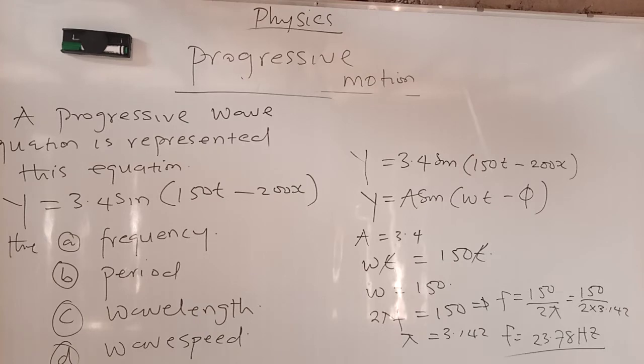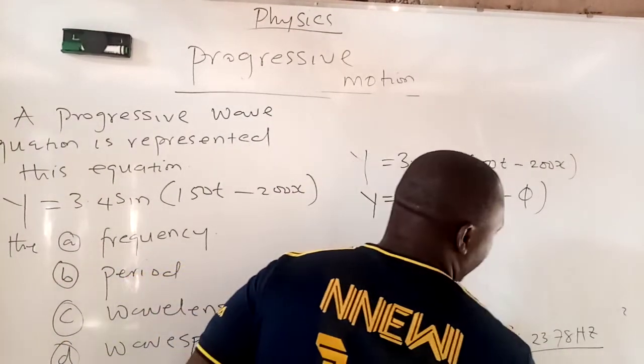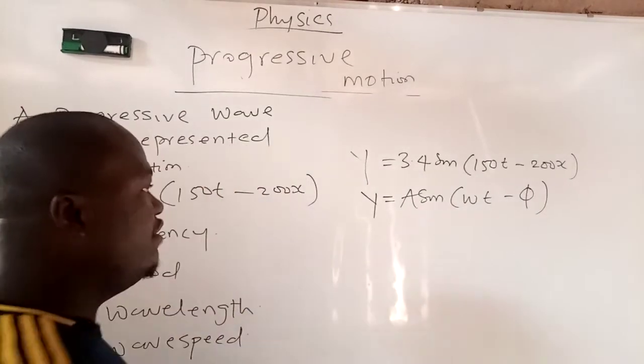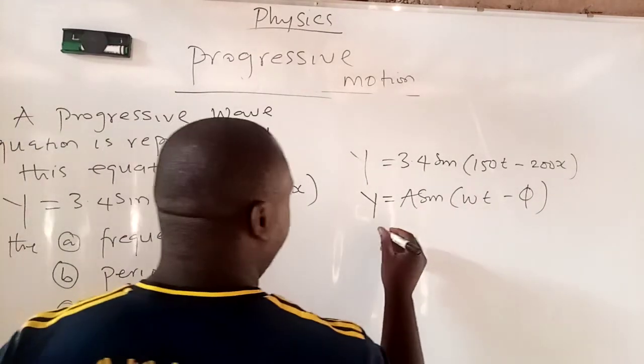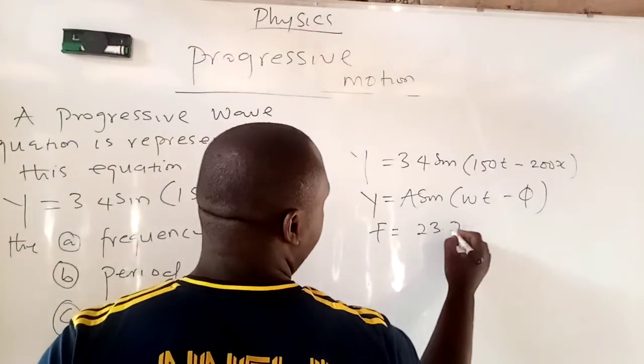The next question, they want you to calculate the period. The period is the time. That is what they want you to calculate. Calculate the period. I'm going to have to be cleaning this thing. That's why you have to be writing it down on your jotter immediately. They want you to calculate the period. From this equation, from here, let me clean this side because we have already found the frequency. Remember the frequency was 23.78 hertz.